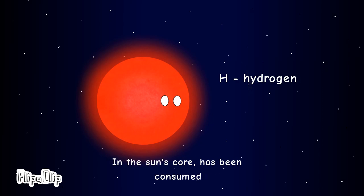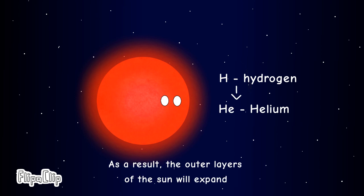Almost all of the hydrogen in the sun's core has been consumed and it starts burning helium. As a result, the outer layers of the sun will expand.